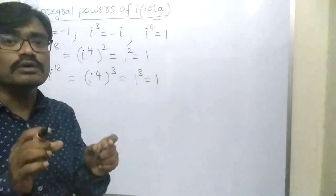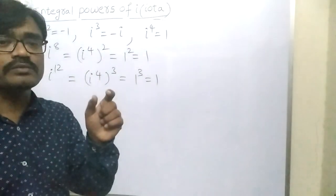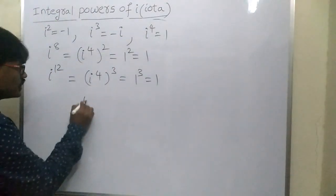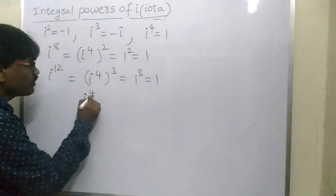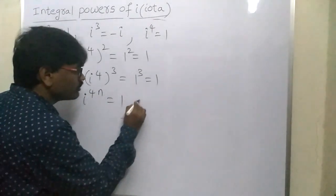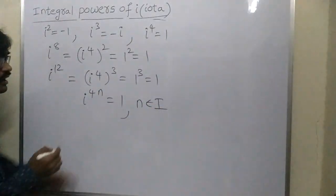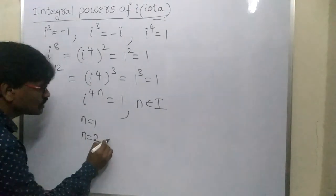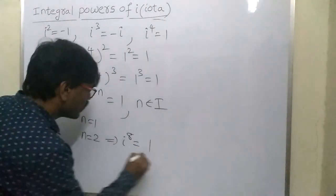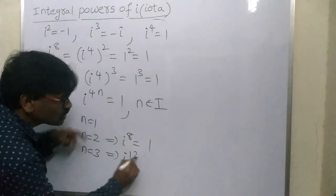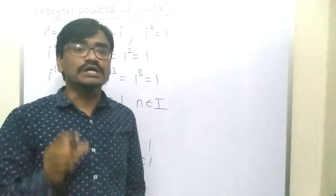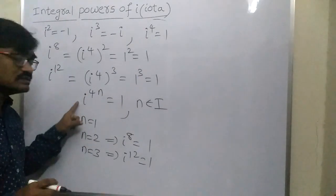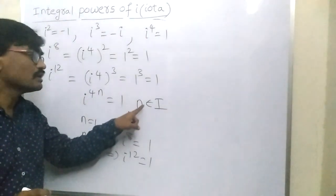All these values are equal to 1, and the powers are multiples of 4. So, if the power of iota is a multiple of 4, its value is always equal to 1. Therefore, in general, it is written as i^4n = 1, where n belongs to any integer. If n = 1, you get i⁴ = 1. If n = 2, you get i⁸ = 1. If n = 3, you get i¹² = 1.